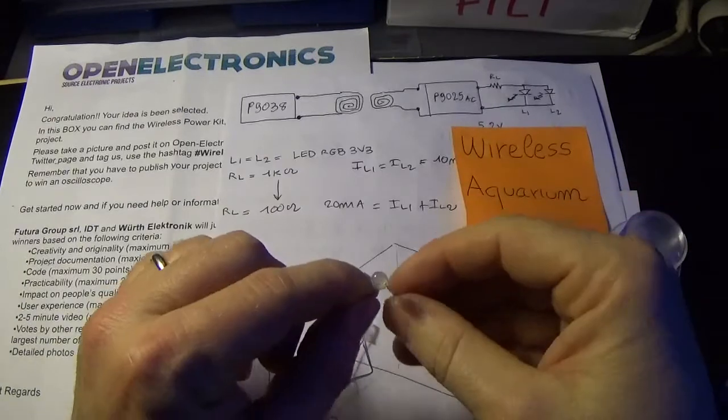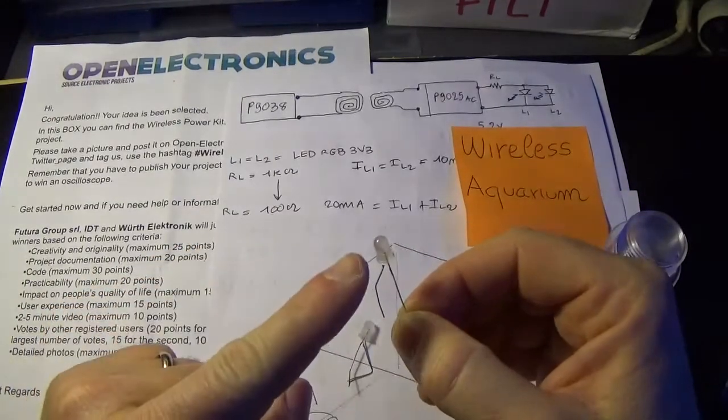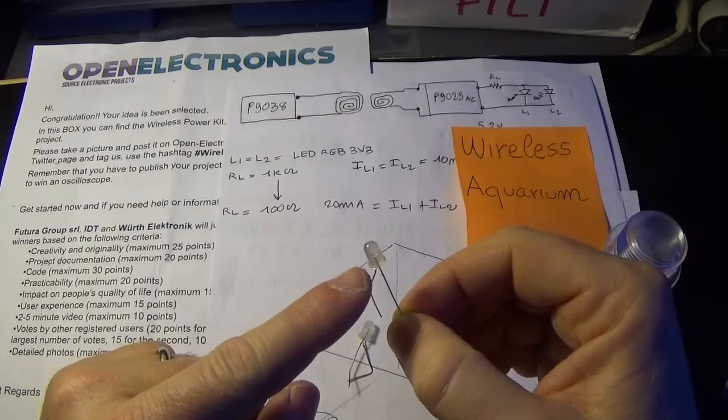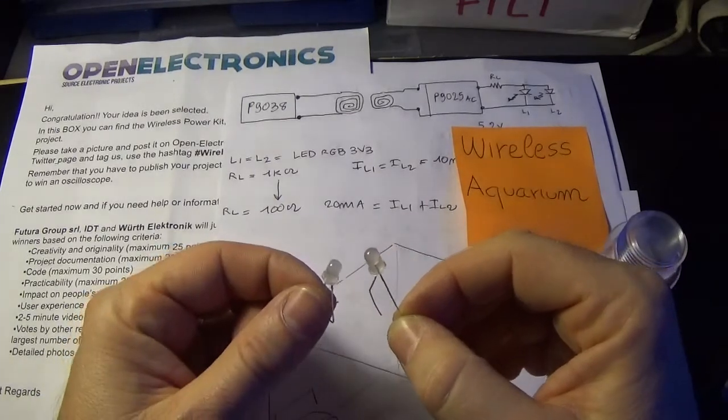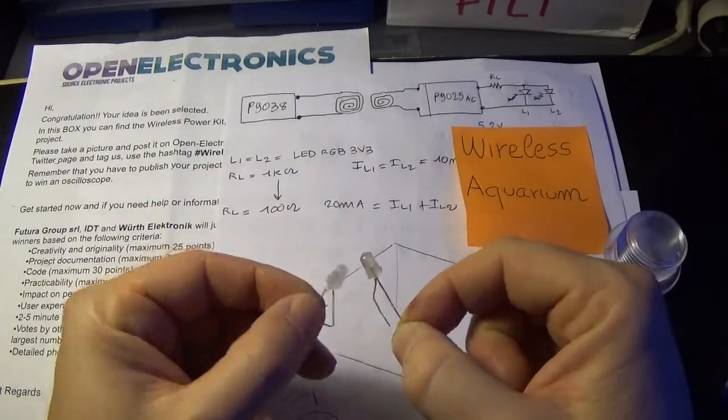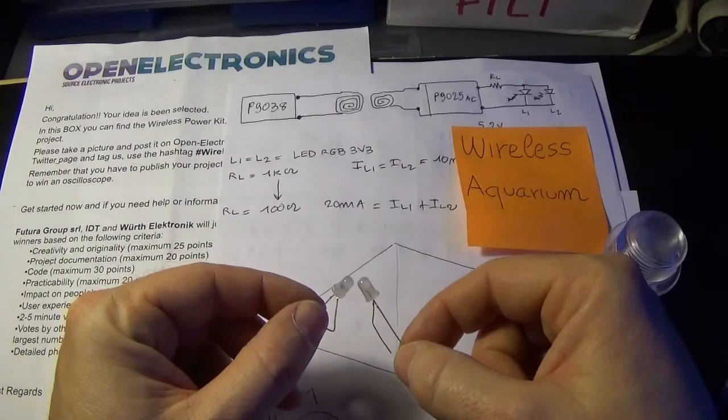The core of the idea is that LED, that is an RGB LED supplied at 3.3 volts, and you can put a lot of these LEDs inside the box supplied by the receiving antenna.